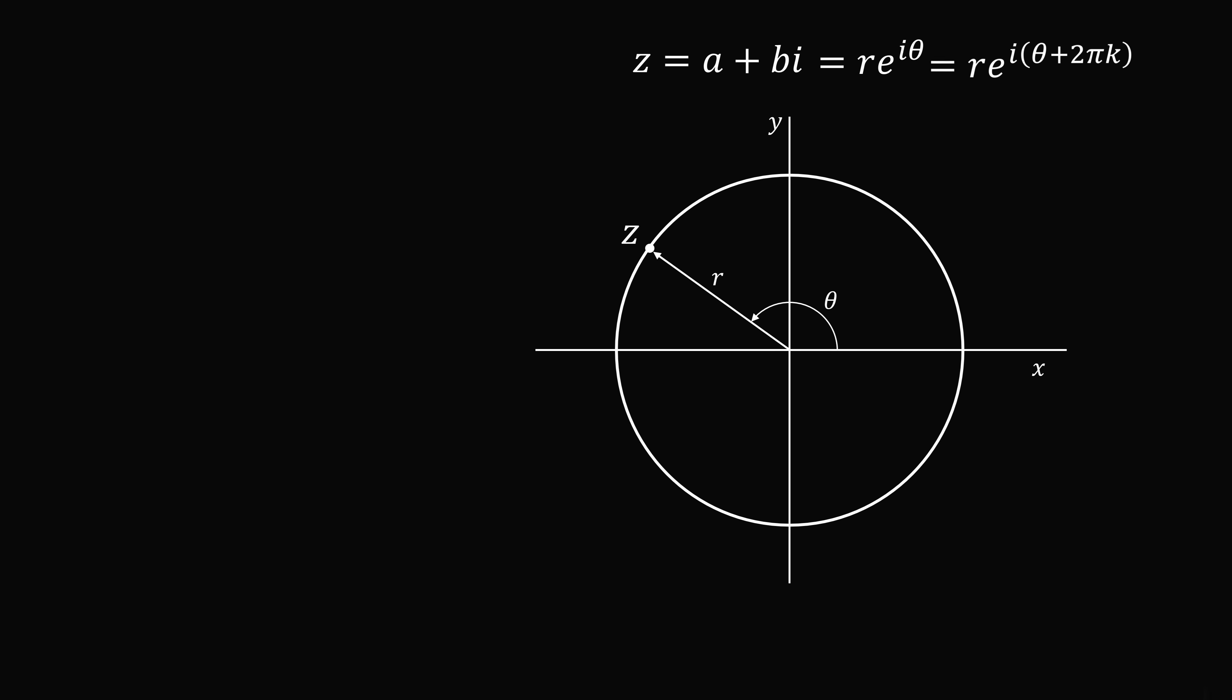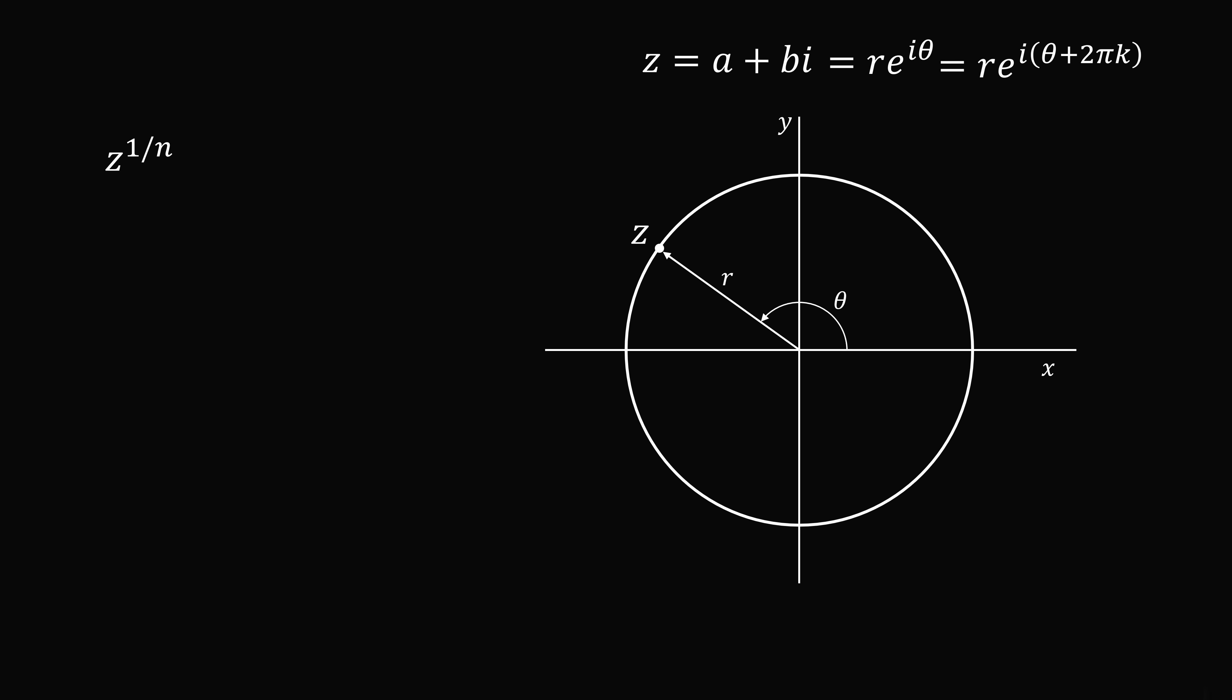So now we want to take z to the power of 1 over n. This will be the set of n roots. Now we can do this to the polar form, and we get the result, the nth root of r, multiplied by e to the power of i, multiplied by the angle theta over n plus 2 pi k over n. This will have distinct roots for k equaling 0, 1, 2, all the way to n minus 1.